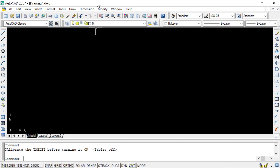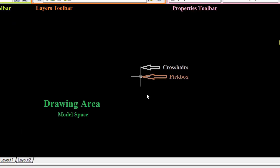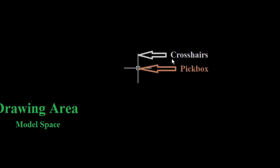The cursor of the mouse turns into a plus sign whenever you bring it into the drawing space. This plus sign is called crosshairs. At the intersection of the crosshairs you will see a small square called the pick box, which is used to select any object on the screen.